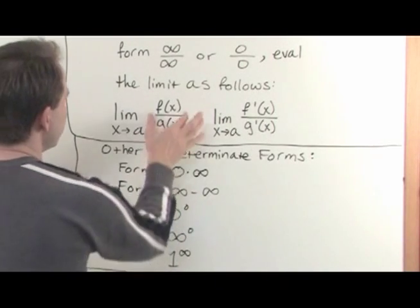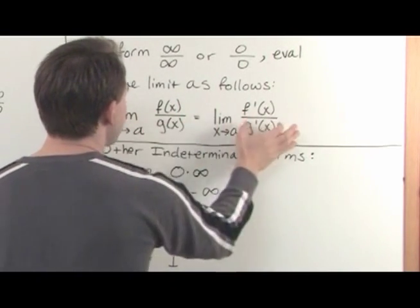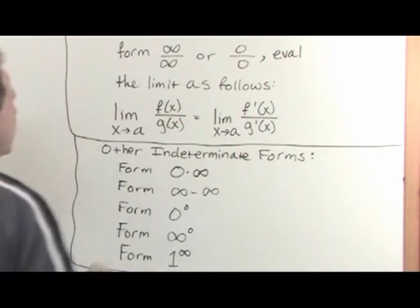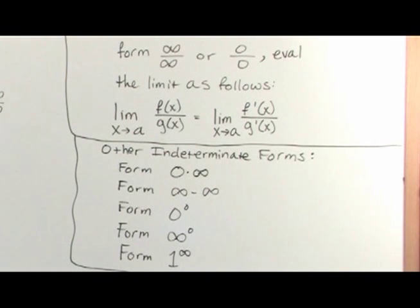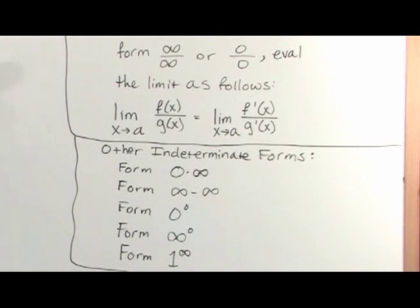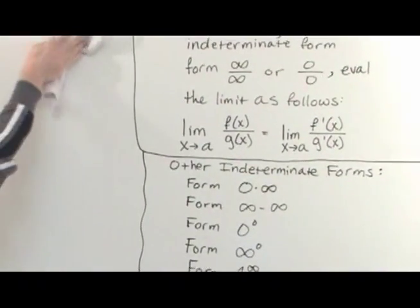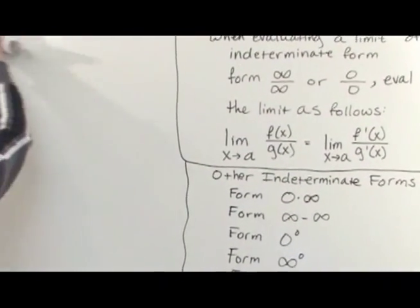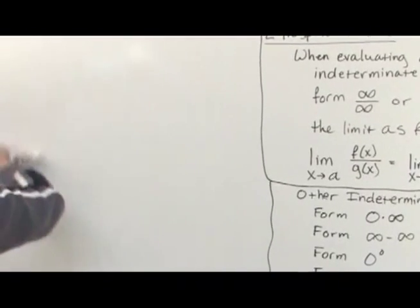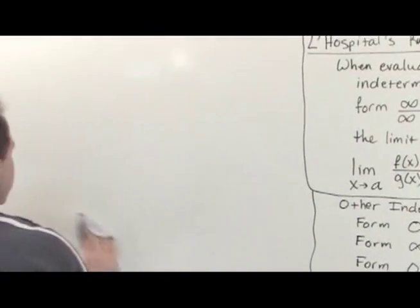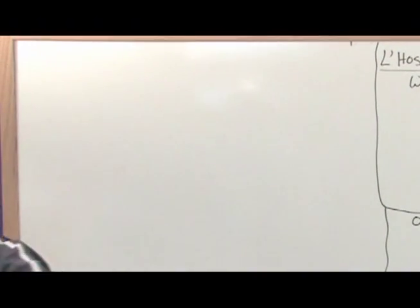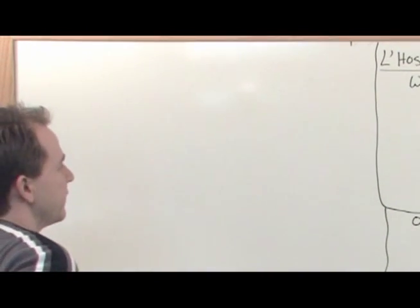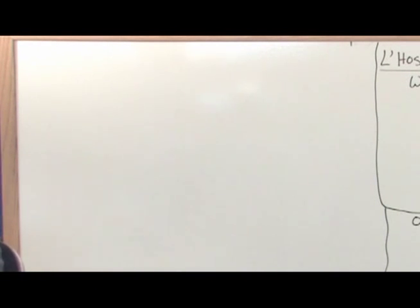So this is really simple. You just take the derivative of the top, the derivative of the bottom, and you take your limit. This is the kind of thing where you can put a theorem on the board and talk about it all day, but really and truly when you start to see some examples it becomes clear. So we're going to do that now.